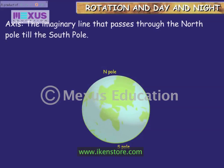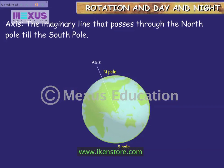The axis is the imaginary line that passes through the North Pole to the South Pole.